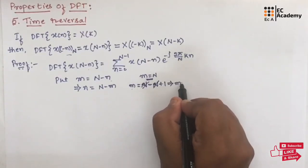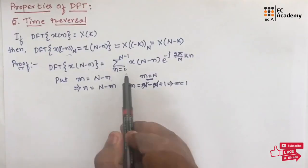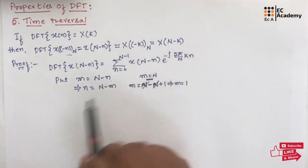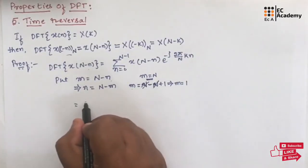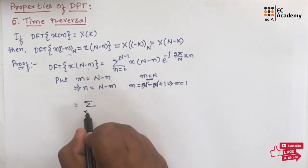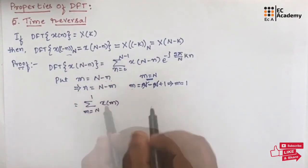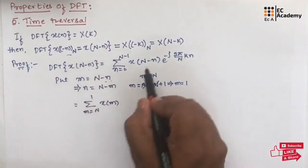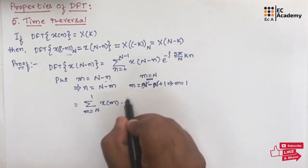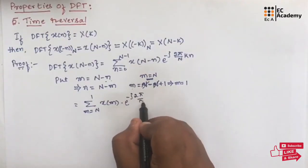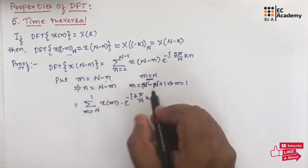We will rewrite the above equation as summation from m = N to 1 of x(m), because N-n is m, into e to the power of minus j 2π/N into k(N-m), where in place of n we write N-m.